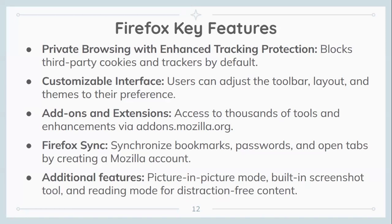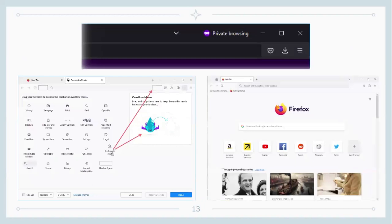Firefox key features: Private browsing with enhanced tracking protection blocks third-party cookies and trackers by default. Customizable interface — users can adjust the toolbar, layout, and themes to their preference. Add-ons and extensions provide access to thousands of tools and enhancements via add-ons.mozilla.org. Firefox Sync synchronizes bookmarks, passwords, and open tabs by creating a Mozilla account. Additional features include picture-in-picture mode, a built-in screenshot tool, and reading mode for distraction-free content. The top left screenshot shows customization and the bottom right shows the standard view.